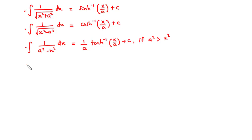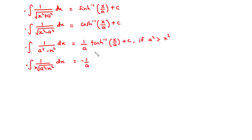And lastly, the integral of 1 over x times the square root of a squared minus x squared dx equals negative 1 over a times sech inverse of x over a plus c. Now using this information, let's try to solve questions 5 and 6.